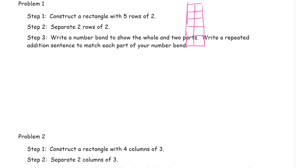So it's going to look like that. And then separate 2 of the rows of 2. So that would be like that. And then you'd have a group here too, right? Write a number bond to show the whole and 2 parts. Then write a repeated addition sentence to match each part of your number bond. Now, this is just kind of to prove a point that you can put anything in a number bond, anything that you can count.